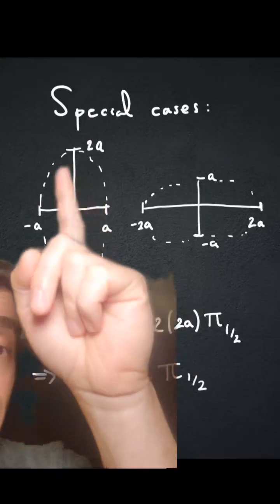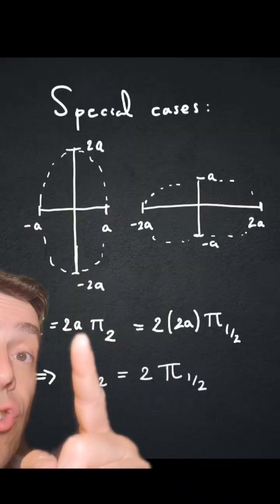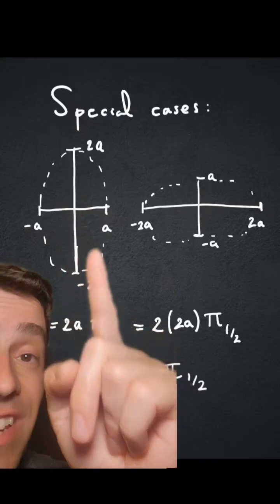And what that's saying, that this circumference is the same as that circumference, but that says that 2 times a times pi sub 2, which is this case, is equal to 2 times 2a times pi of a half.